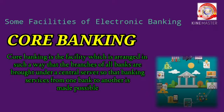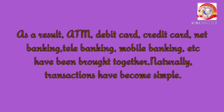Some facilities of electronic banking: First is core banking. The full form of core banking is Centralized Online Real-Time Exchange Banking. Core banking is a facility arranged so that branches of all banks are brought under a central server, making banking services from one bank to another possible. As a result, ATM, debit card, credit card, net banking, tele-banking, and mobile banking have been brought together, making transactions simple.